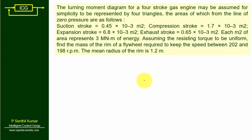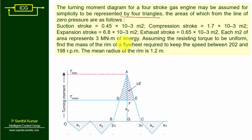Now let us take one more problem, very similar to the previous one. The turning moment diagram of a four-stroke gas engine is assumed to consist of four triangles: suction negative, compression negative, expansion (power stroke) positive, and exhaust negative. The areas of these four triangles are already given, confirming the problem is related to an IC engine model.